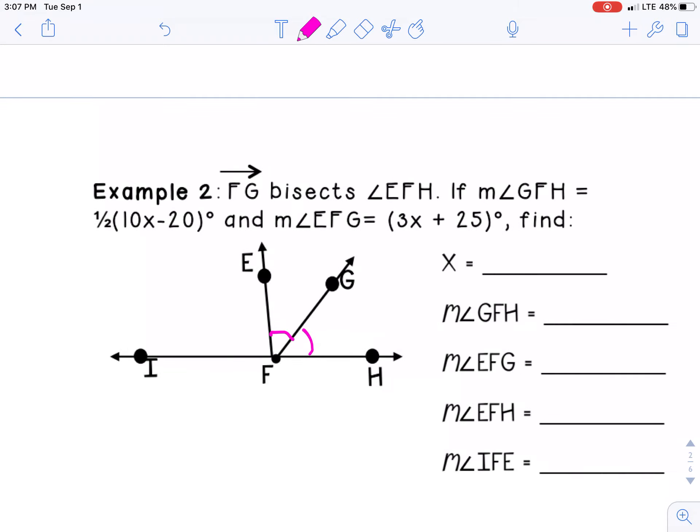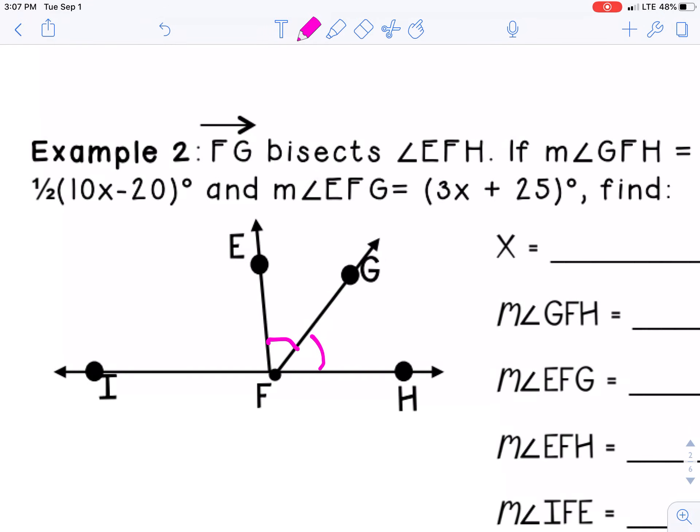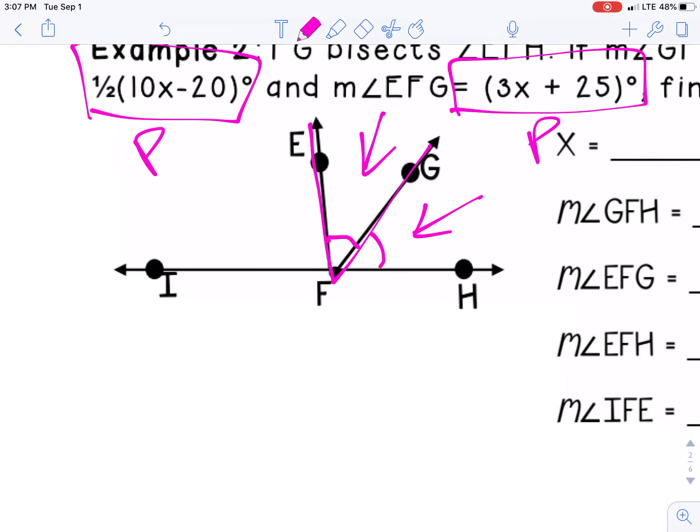So it gives me GFH is 1/2(10x-20). That's a part because that's this guy down here. And it gives me EFG, which is, if we follow the lines, EFG is this angle. That's the other part. So in this equation they give me the two parts. Well, since it says bisect, what do I know about those two parts? Those two parts are going to be the exact same measurement. So if they give me part and a part, you're going to put them equal to each other.